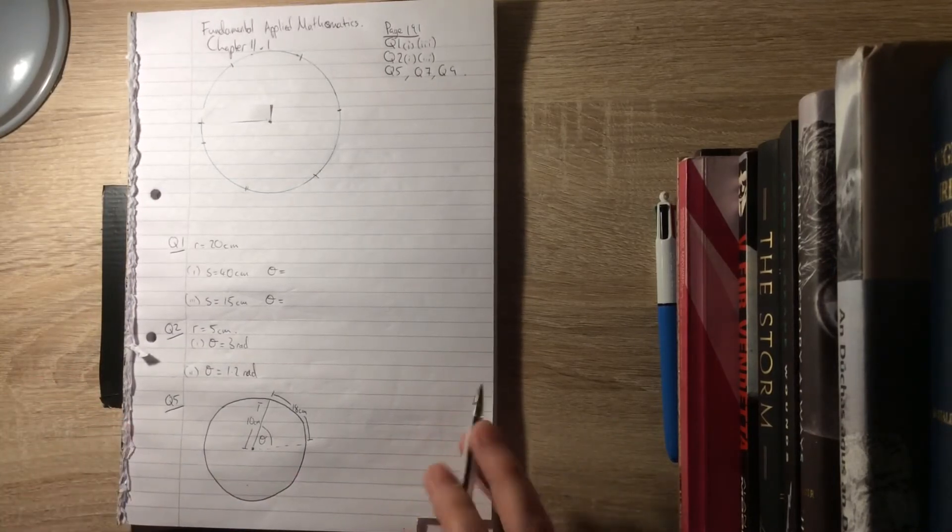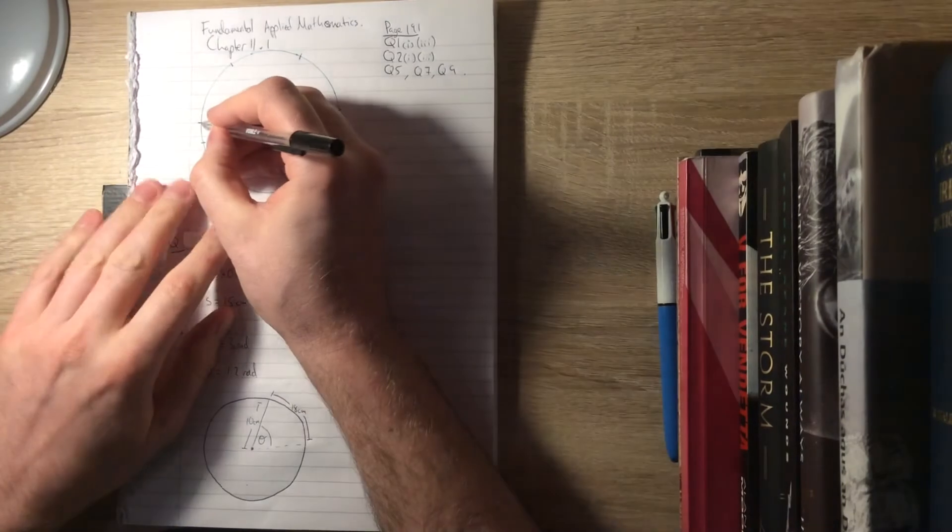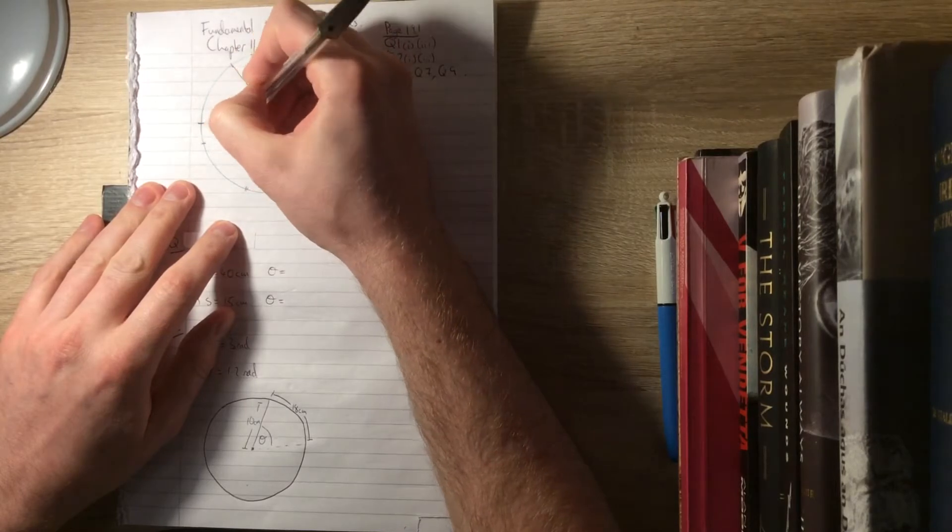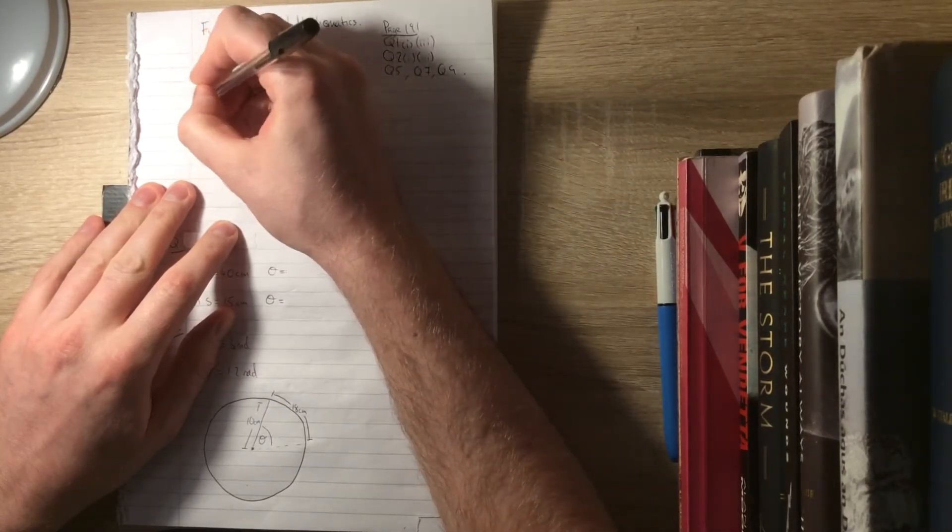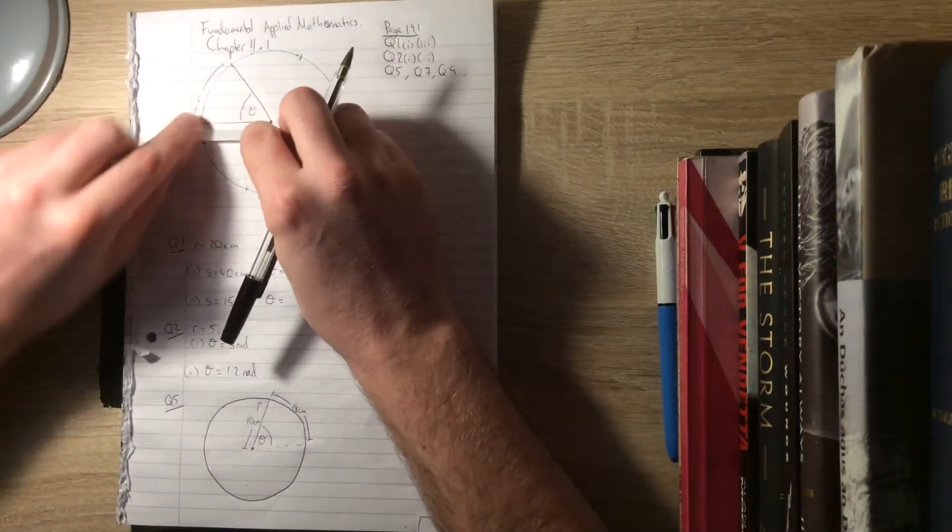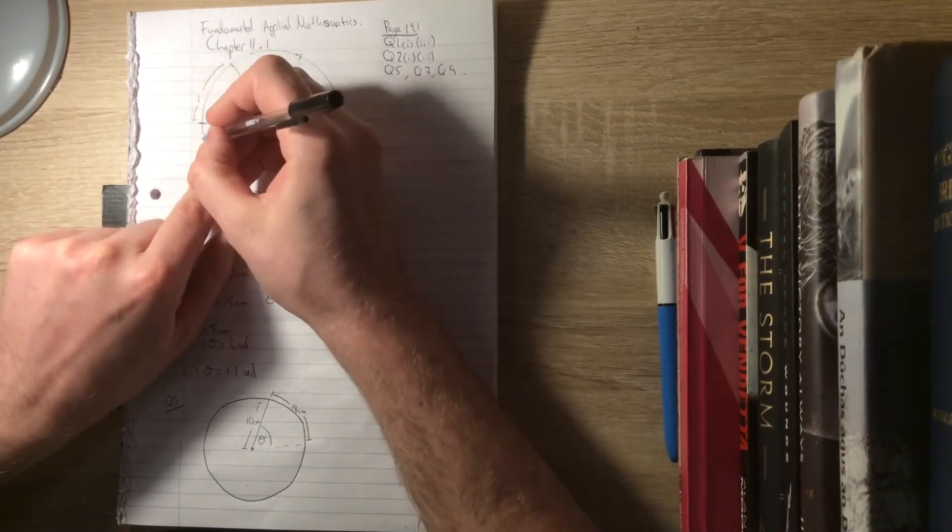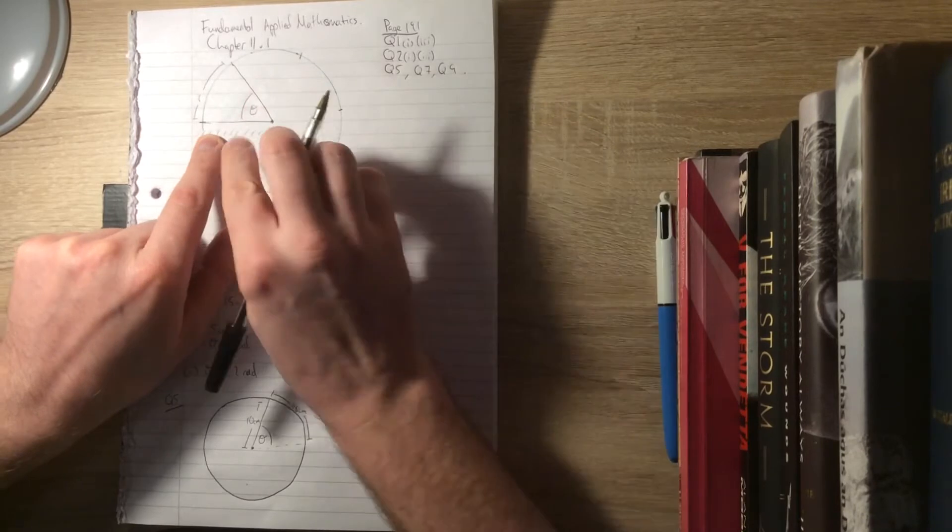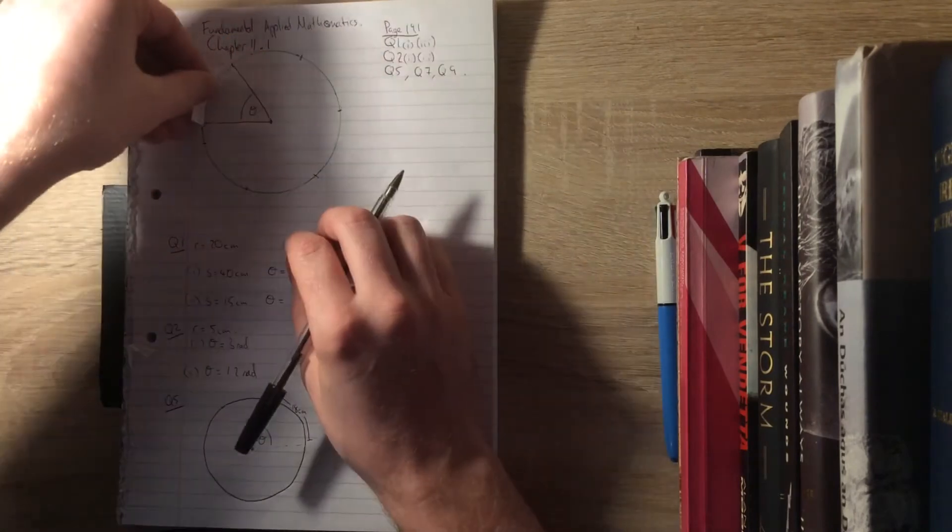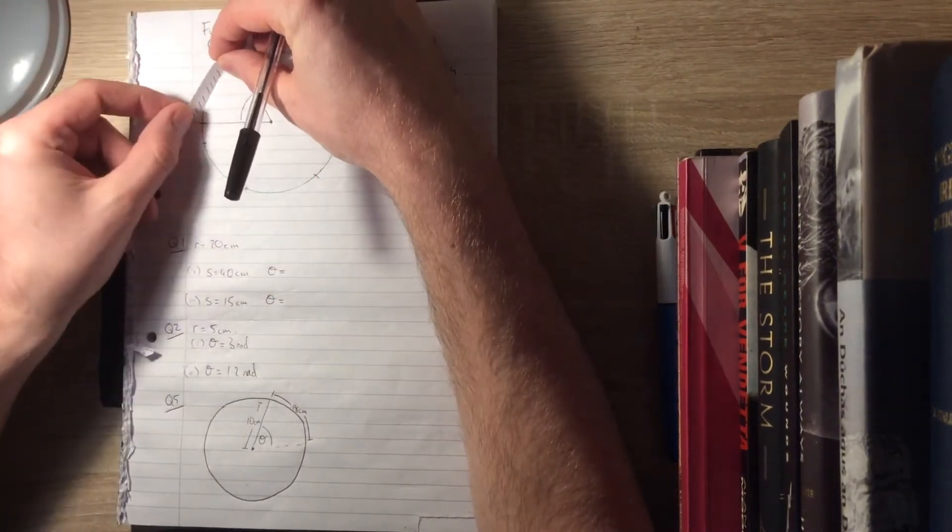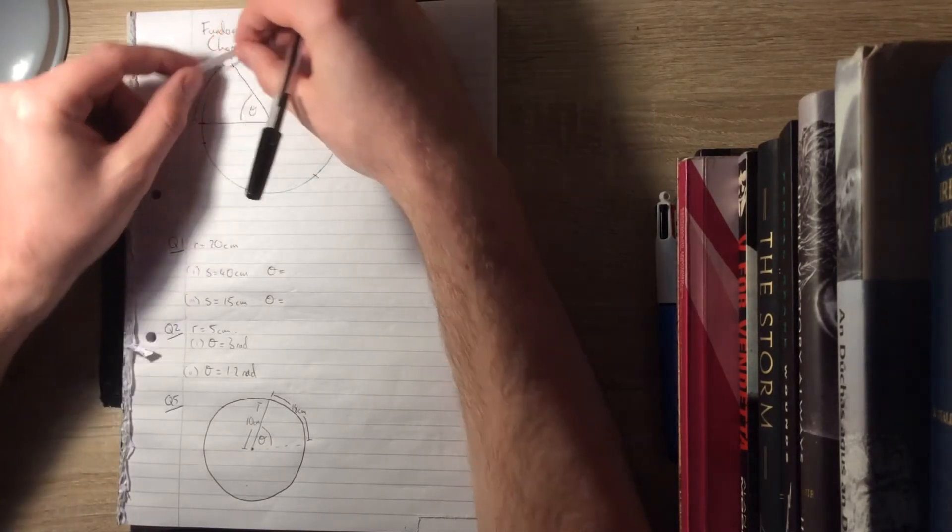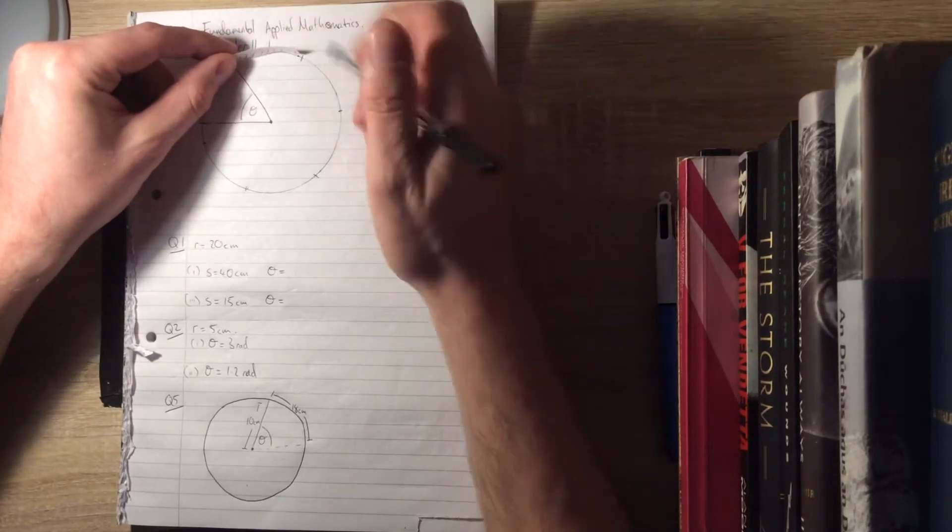A radian is the angle subtended by an arc that is the same length as the radius. That's one radian that I've just marked off there. You can see here with this little piece of paper is one radius length. I'll color that in so you can see it. That's one radius, and if I mark it around the outside here, it's the same length. You can see it's approximately the same. You might trust me that it is the same.